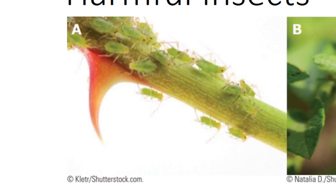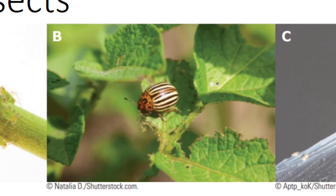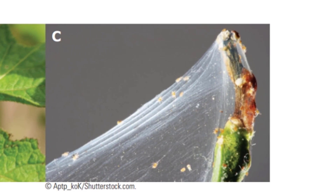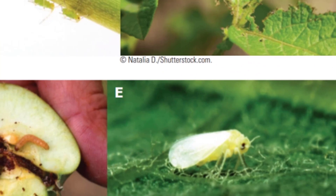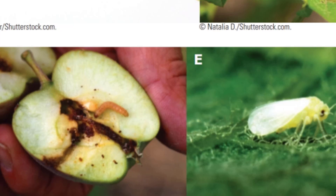The Colorado potato beetle larvae and adult are pests that attack tomato, eggplant, and a variety of other crops. Spider mites are not true insects — they have piercing and sucking mouthparts and live on the undersides of leaves, attacking a variety of crops including vegetables, fruits, nuts, and ornamentals. The codling moth attacks apples, pears, and walnuts; the larvae cause an unsightly appearance because they tunnel into the fruits.